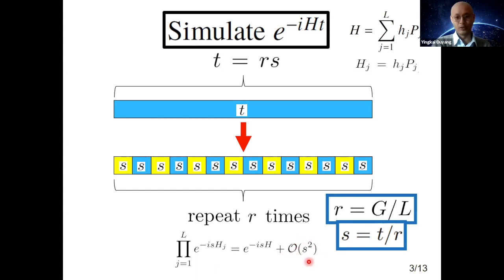One simple approach is instead of doing this entire simulation time in one go, to break it into many different time steps, baby time steps s. For each of these baby time steps, the trotterization error will be small. The overall simulation error would just scale as r times O(s^2) and can be suppressed as long as we pick s to be sufficiently small.